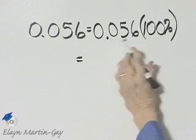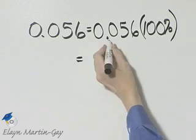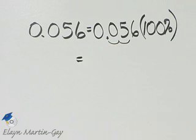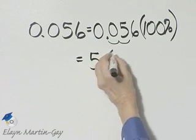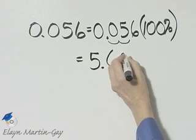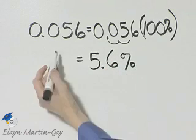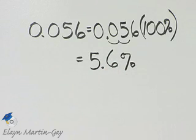To multiply a number by 100, that has the effect of moving this decimal point two places to the right. So that will be 5 decimal point 6, and then I do have that percent symbol. So this is equal to 5 and 6 tenths percent.